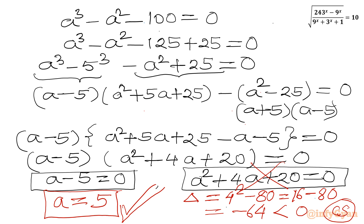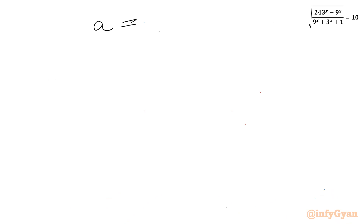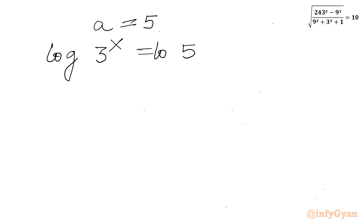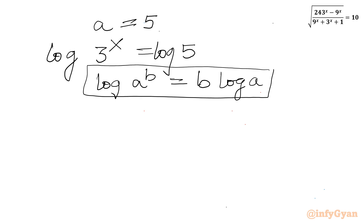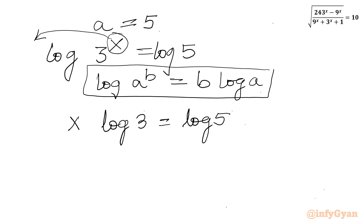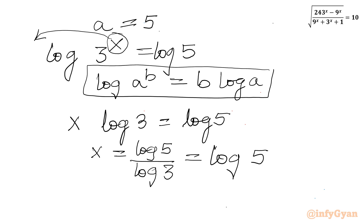Now let us put back our substitution. Since a equal to 5 and a was 3^x, we have 3^x equal to 5. Taking the log of both sides and applying the property log(a^b) equals b times log(a), we get x times log 3 equal to log 5. Dividing both sides by log 3, x equals log 5 over log 3, which is nothing but log base 3 of 5. This is our final and ultimate real solution.